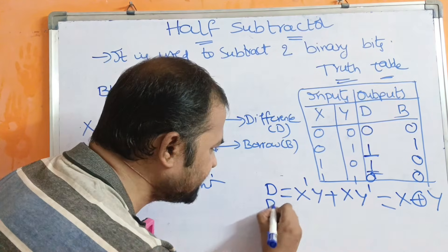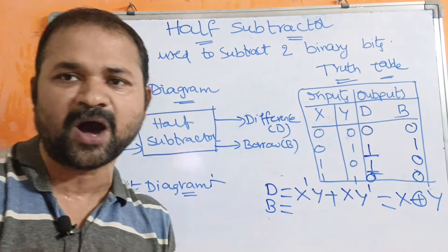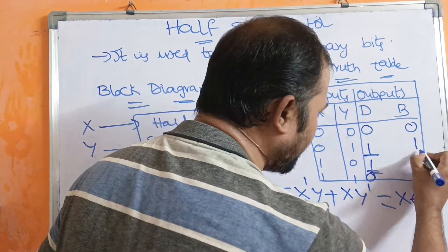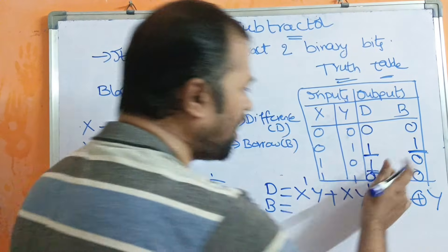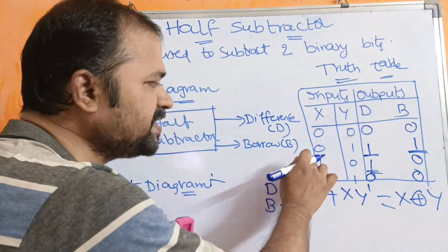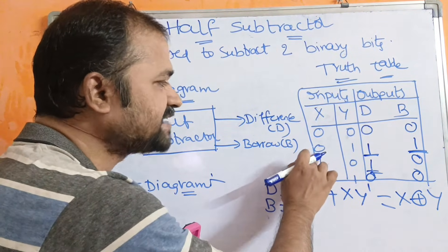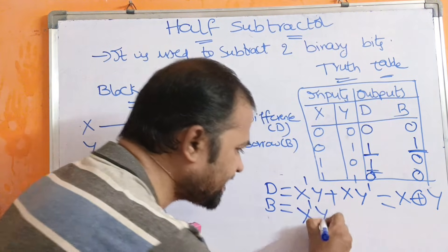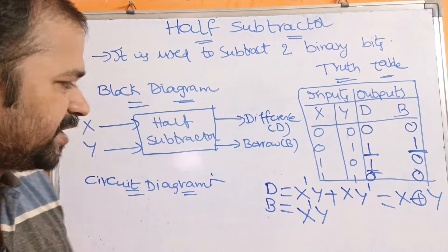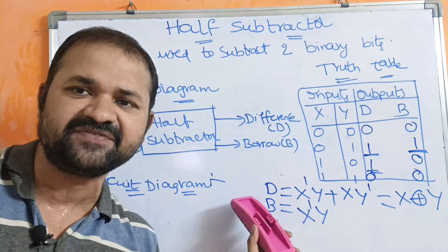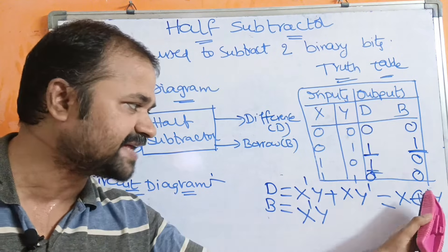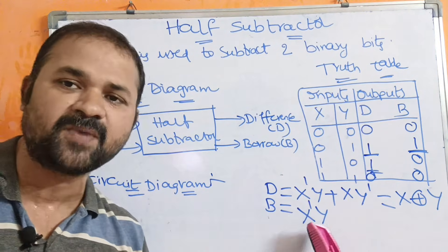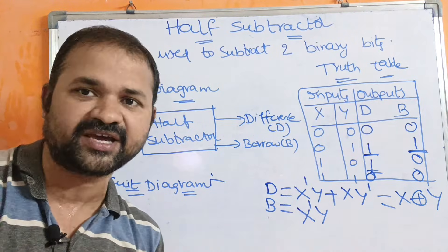Now let us derive the equation for the Borrow. Observing the Borrow column, we have only one '1'. The combination is X=0, Y=1, so Borrow can be written as X-bar·Y. So the equation for Difference is X XOR Y, whereas the equation for Borrow is X-bar·Y.